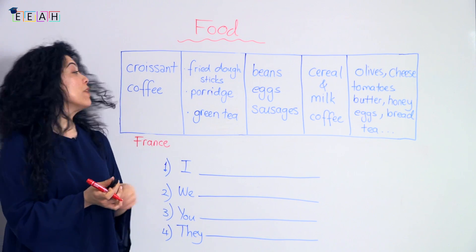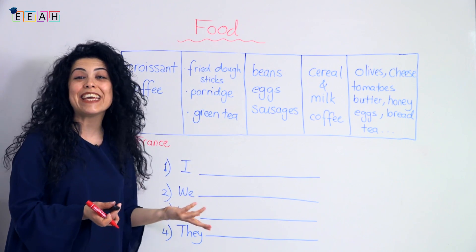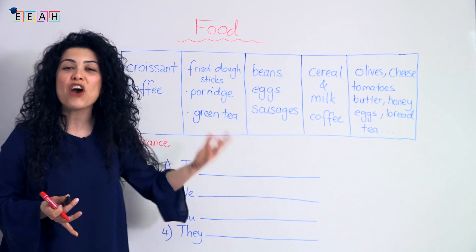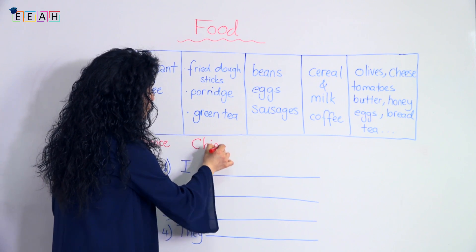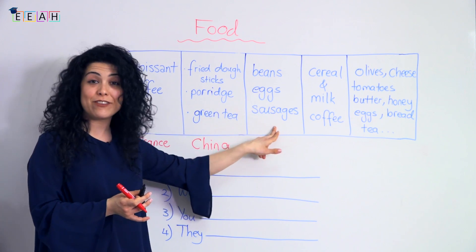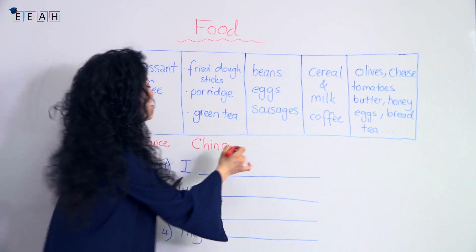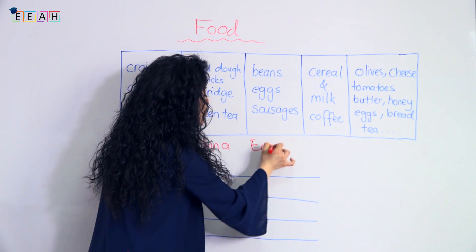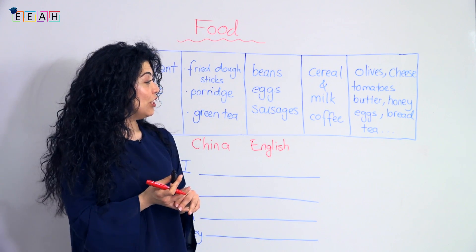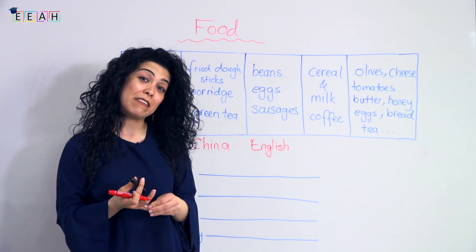The second group: we have fried dough sticks, porridge, and green tea. This belongs to China — so this is a Chinese breakfast. The third group: we have beans, eggs, and sausages. This is English breakfast for sure — yes, a typical English breakfast.